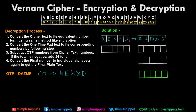Step three in decryption: subtract the OTP numbers from the ciphertext numbers — this is the opposite of encryption where we added. So: 3 − 15 = −12, 23 − 12 = 11, 10 − 25 = −15, 4 − 0 = 4, and 10 − 3 = 7. There is a catch: if the output is negative, add 26 to it, since we have no character assignments for negative numbers. The two negative numbers are −12 and −15. Adding 26 gives 14 and 11 respectively; 11, 4, and 7 remain as they are.